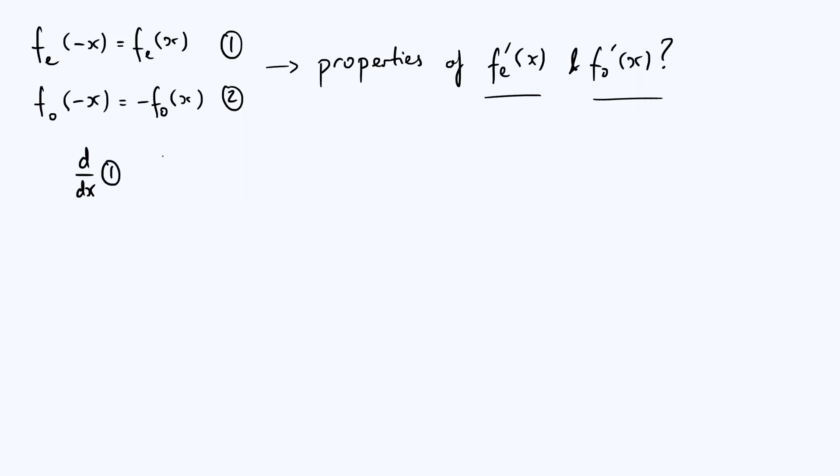So in other words applying the operator d by dx to equation 1. So that'll give d fe of minus x by dx and the left hand side is just equal to d fe of x by dx. Now the right hand side, straightforwardly, is just the derivative of the even function fe. d fe of x by dx is the derivative. The left hand side, however, is not the derivative because you're not differentiating the function with respect to its argument. So if we want to turn the left hand side into an actual derivative of the function fe, we need to be differentiating with respect to the argument of the function itself, which here is minus x. So if we want to be differentiating with respect to minus x, we've got to use the chain rule.